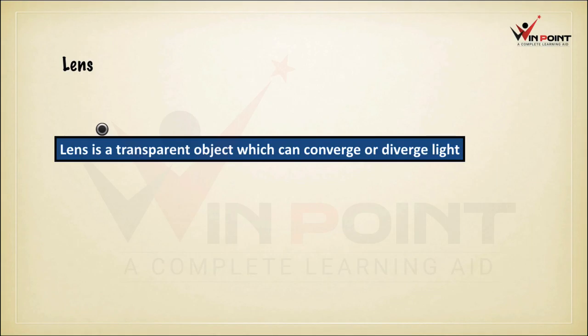A lens is a transparent object which can converge or diverge light. Sometimes the lens will converge and concentrate light into a particular point, and sometimes it will diverge the light.